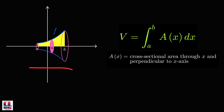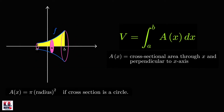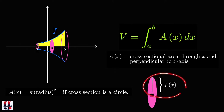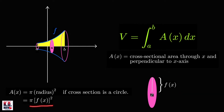Because we're talking about solids of revolution, the cross section is always a circle. Therefore, the cross sectional area equals pi times the square of the radius. Since the radius is just f of x, the cross sectional area is pi times f of x, quantity squared.